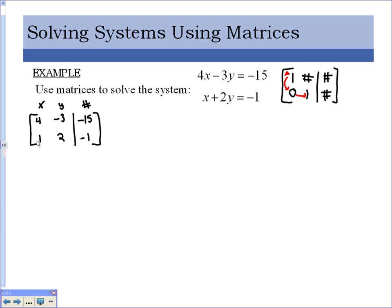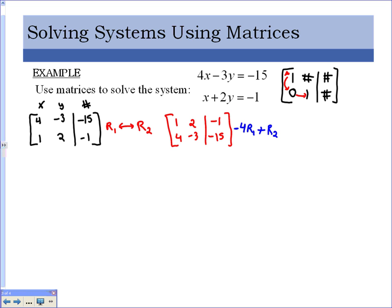It would be convenient to have the 1 in the top left, so let's switch row 1 with row 2, giving us 1, 2, negative 1 on top and 4, negative 3, negative 15 on the bottom. Any time we want a 1 in the first spot and one of our rows already has a 1 there, the first step is to just switch the rows. Now I want to get a 0 below it. I can multiply row 1 by negative 4 and add it to row 2, because negative 4 plus 4 equals 0.